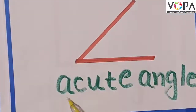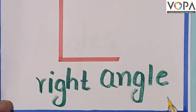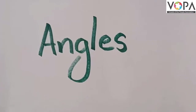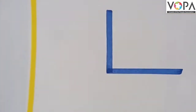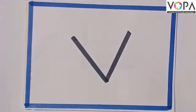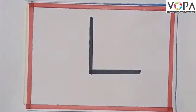Then acute angle, then right angle. Now you know about the angles. I am going to show you some figures of angles — can you identify them? Look at this angle — this is a right angle. Very good. Look at this angle — this is an obtuse angle. Very good.